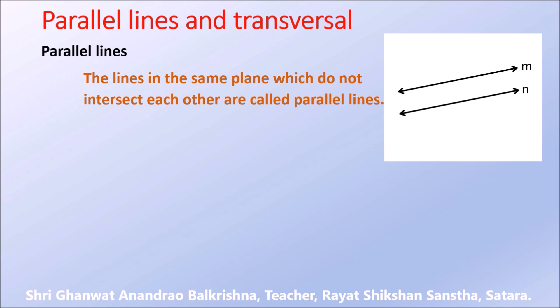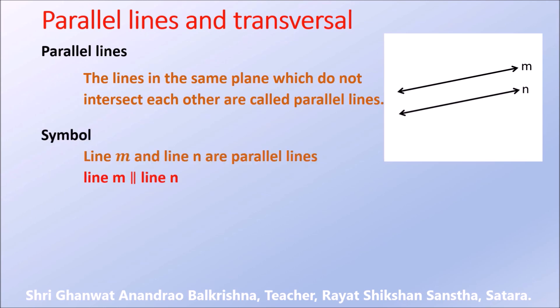Symbolically, we can represent this as: line M and line N are parallel lines. We use the symbol of two vertical lines to indicate that two given lines are parallel.